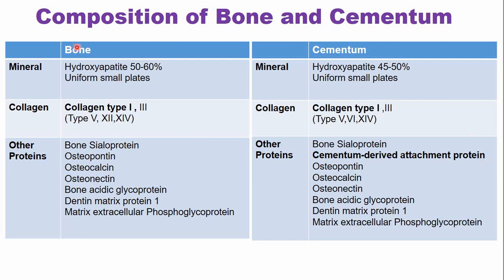In general, the composition of bone and cementum are very similar, but there are differences too. Bone is a vascular tissue with a rich nerve supply, whereas cementum does not have any blood vessels or nerves. Type 3 collagen is only present in cases of repair and regeneration; otherwise, type 1 is the predominant form of collagen fiber in these tissues.